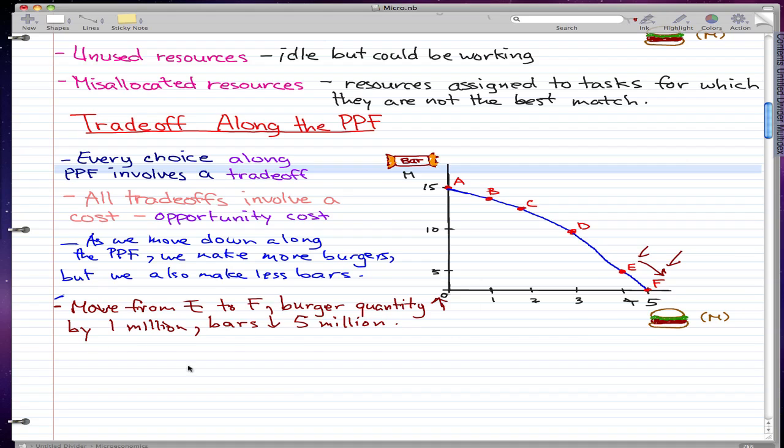What this essentially means is that to make 1 million more burgers we have to give up 5 million bars. Or essentially, if we divide that by 1 million, we get 1 burger costs 5 bars.